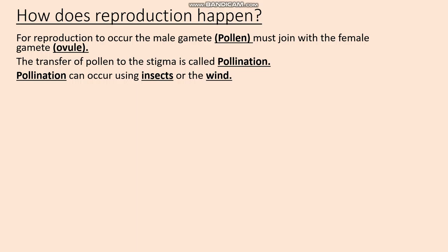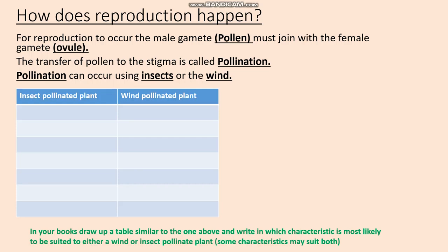Some plants are able to self-pollinate, but we're really only interested in pollination produced by insects and the wind. Under the title 'How does reproduction happen?' I'd like you to draw up a table with column headings, and then write down the characteristics of plants designed to be pollinated by insects, and the characteristics of those designed to be pollinated by the wind. Let me give you a list of characteristics and a couple of examples.